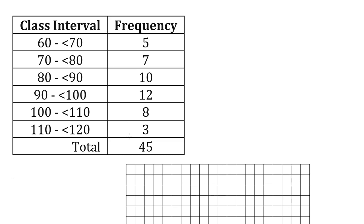And the ogive is a graph of the cumulative frequency of this data. So the first thing we need to do is work out what that cumulative frequency is. So we'll first create on our table an extra column for our cumulative frequency.